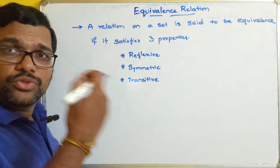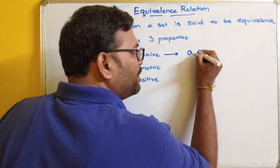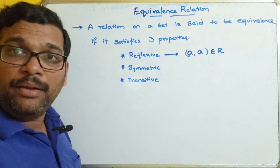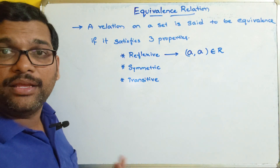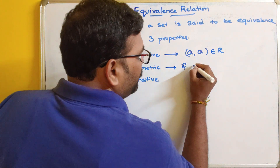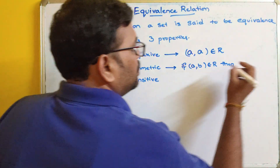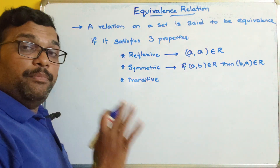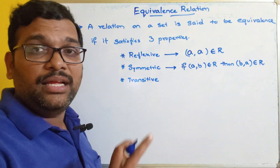So we will see what is reflexive — just a quick recall. Reflexive means if any element is mapped with the same element, like (1,1), (2,2), (a,a), (b,b) — the element should map to itself only. And symmetric: if (a,b) belongs to R, then the inverse (b,a) should also belong to R. If (a,b) belongs to R, then (b,a) should also belong to R — then we can say it is a symmetric relation.